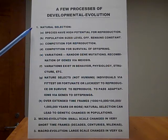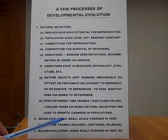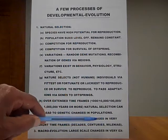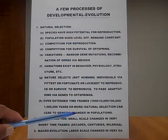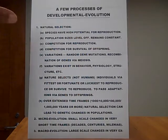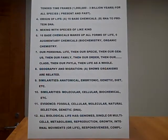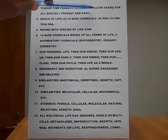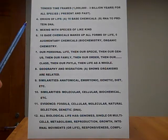We'll go from number one, natural selection, to number two now. Microevolution, which means small-scale changes in very short time frames — decades, centuries, millennia. And macroevolution, which means large-scale changes in very extended time frames, such as 1,000,000 years to 3,000,000,000 years, for all species present and past.